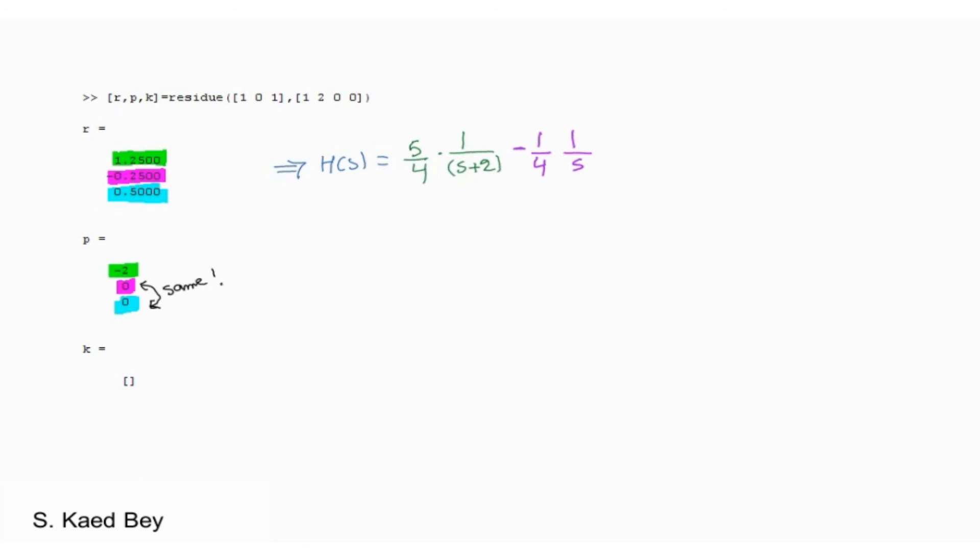If multiple roots are present at the same location, which is S equals to zero, then the residues are arranged as per the pole multiplicity. In our case, the negative 0.25 corresponds to the S pole, and the 0.5 corresponds to the S squared.